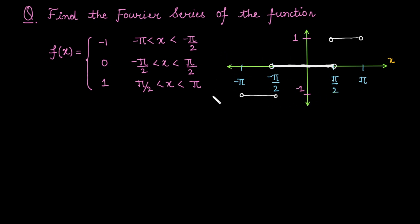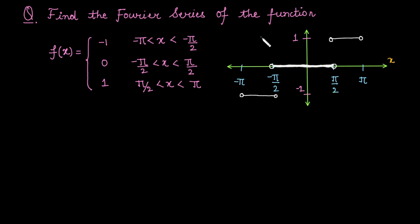This function is defined on a symmetric interval, and the function values are negatives of each other — minus 1, 0, and 1. The zero function is defined on the symmetric interval minus pi by 2 to pi by 2, and a zero function is always symmetric about both the y-axis and the origin, so it is even as well as odd.